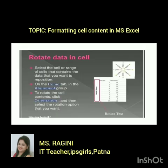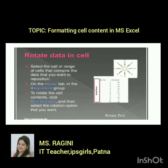To rotate data in a cell, select the range of cells that contains the data, go to the Home tab and then the Alignment group, and click Orientation. Select the rotation option that you want. Like this, you can rotate data in a cell as per your requirement.